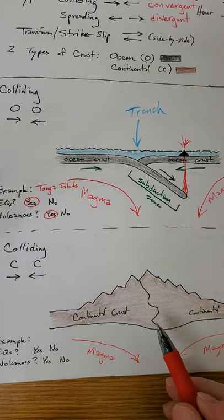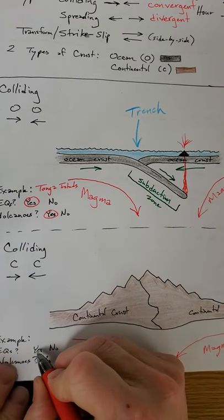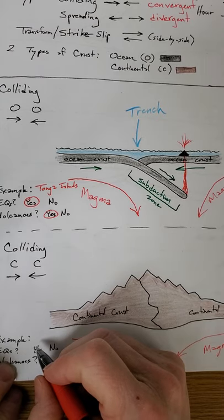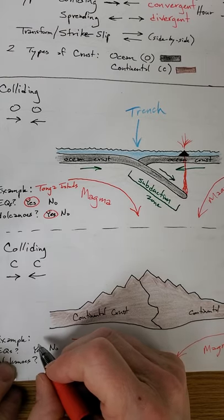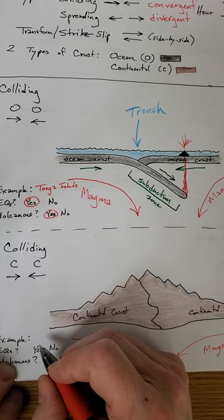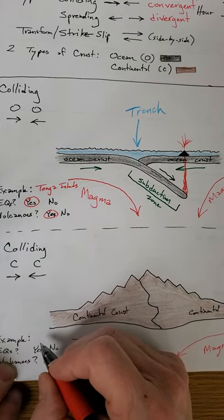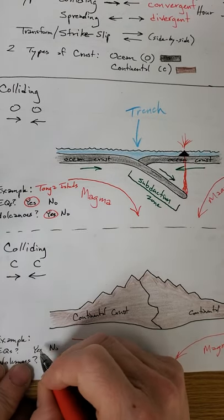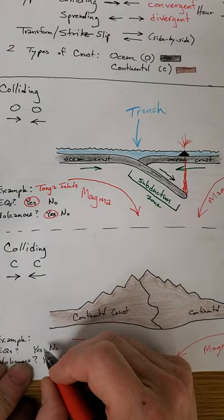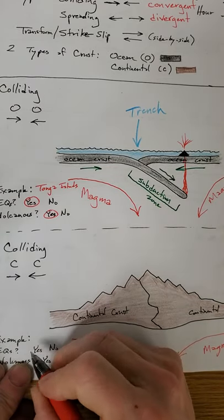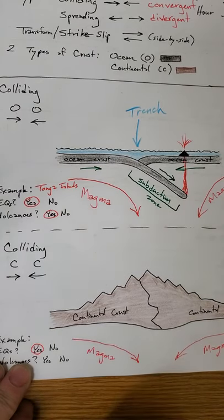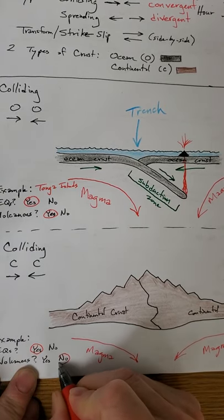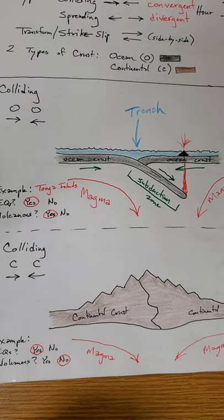Do you think you'd have earthquakes where you have all this collision? Yeah. Really bad earthquakes. Earthquakes that have killed 20, 30, 40, 50,000. I think the world record is almost a million people have died in a single earthquake in Asia. Imagine living in mountains, steep mountains, and having a terrible earthquake. And then rock slides and your house is destroyed. So lots of earthquakes, no volcanoes.